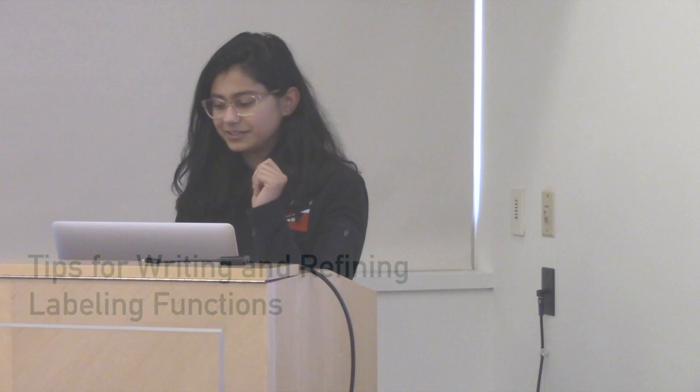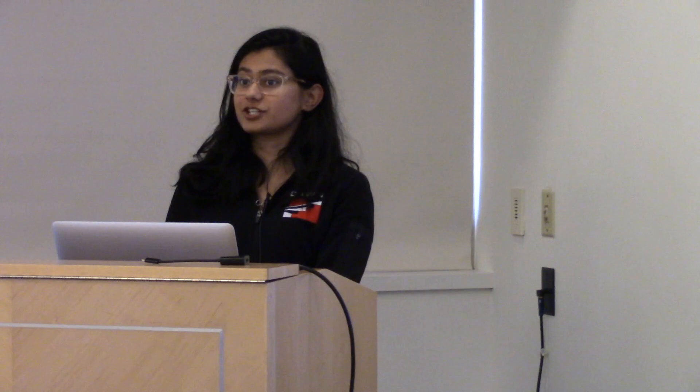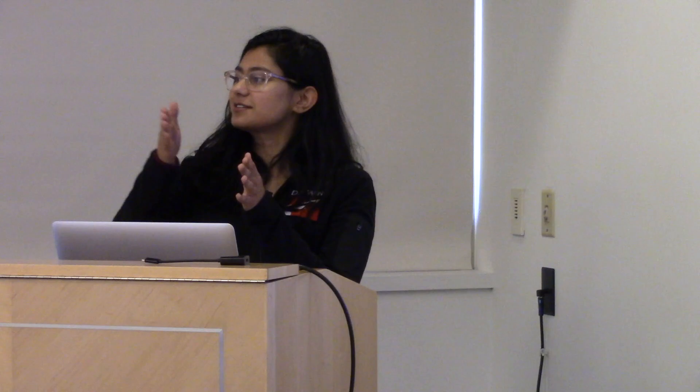Starting with refining and writing labeling functions. When I joined the lab around two years ago, Snorkel was just starting, so I was one of the guinea pigs for writing labeling functions. I thought it was just a crazy art — you had to have practice to know how to write it properly. I didn't know what metric to use, where to start, whether to go broad then narrow or narrow then broad. But with more practice and talking to people, I found there were certain signals you could systematically use.